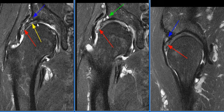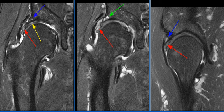Deep chondral fissuring with areas of cartilage delamination are present along the lateral acetabular roof. There is asphericity of the femoral head-neck junction, compatible with femoroacetabular impingement in the setting of developmental dysplasia of the hip.